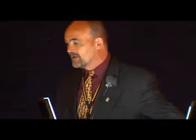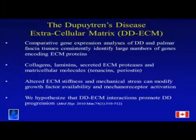If we're going to come up with an effective treatment for this condition, we need to look at the Dupuytren's disease ECM. Comparative gene expression analyses from many laboratories — many of them performed by people in this room, such as Dr. Bayard's group and others, including our group — have consistently identified large numbers of genes encoding extracellular matrix proteins.